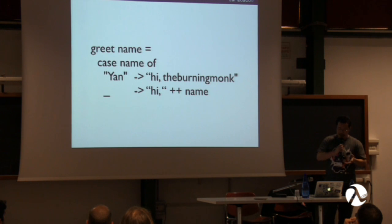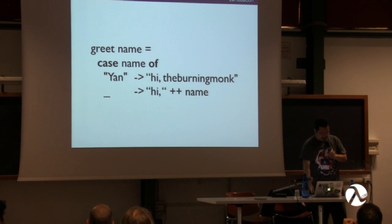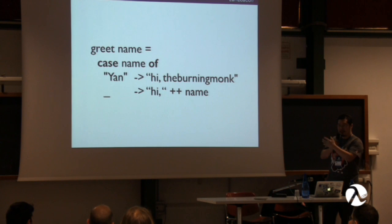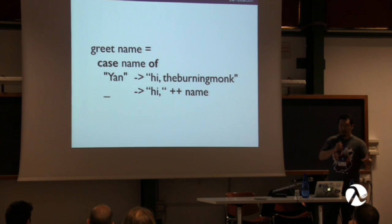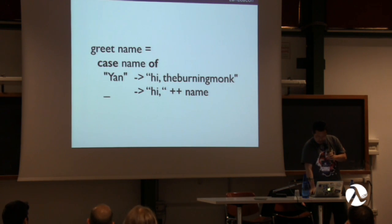Elm has support for pattern matching using the case-of syntax. For the input argument 'name', if it equals 'yen' then do this; otherwise, for all other values we use underscore as a wildcard to indicate we don't want to bind the value.